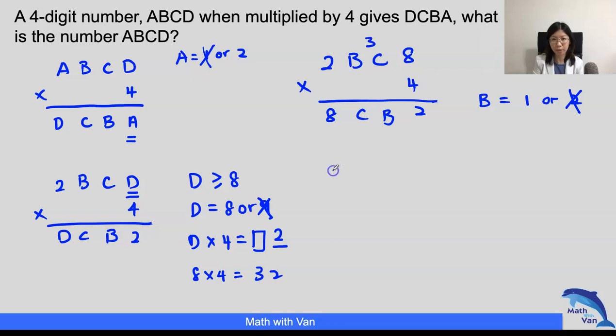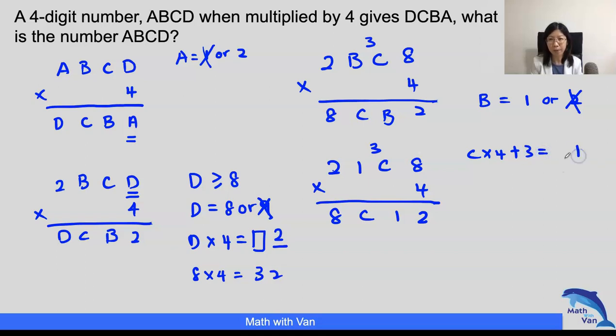Let's put in the numbers now. So I have 2, 1, C, 8. Now we know that is carryover here, and what we do know is that C times 4 plus 3 will give me a number that ends with 1.